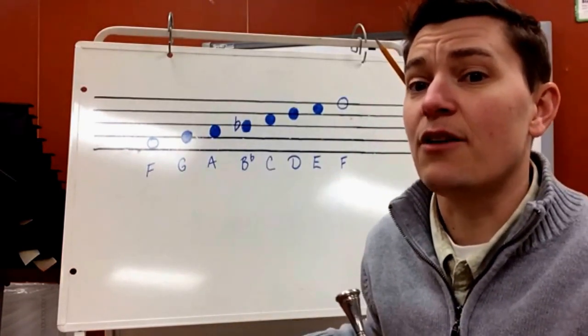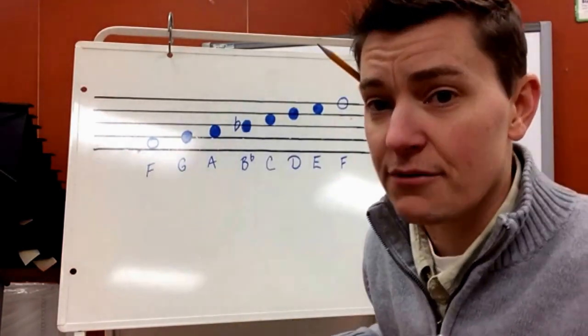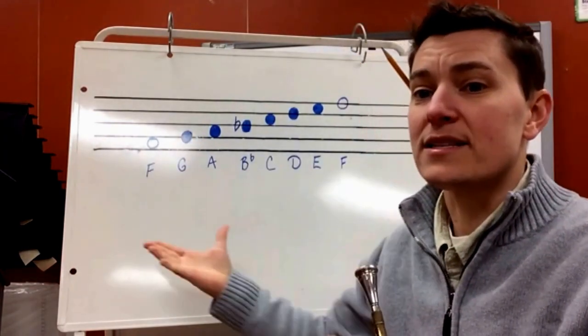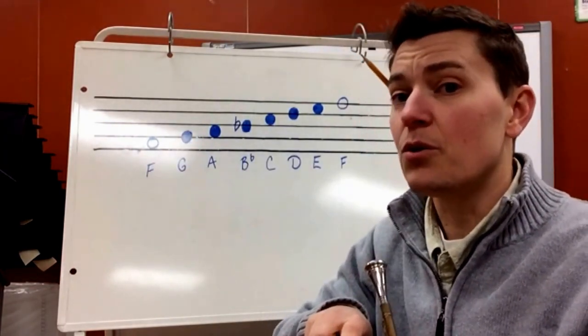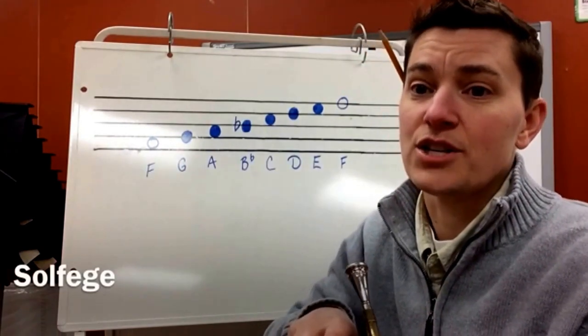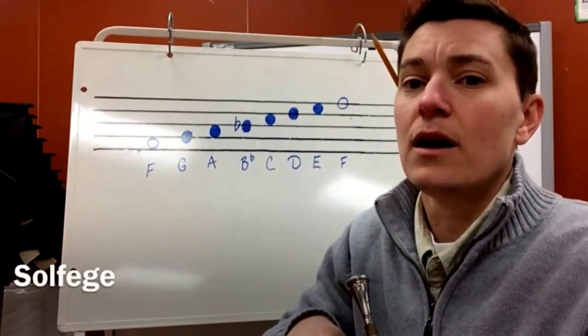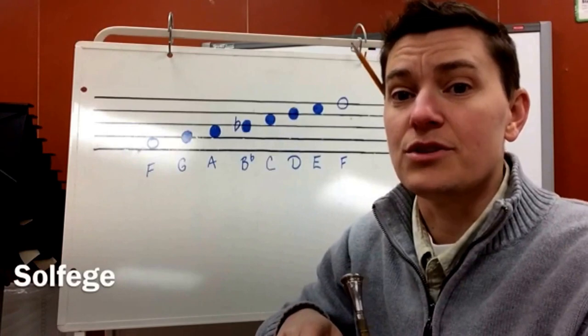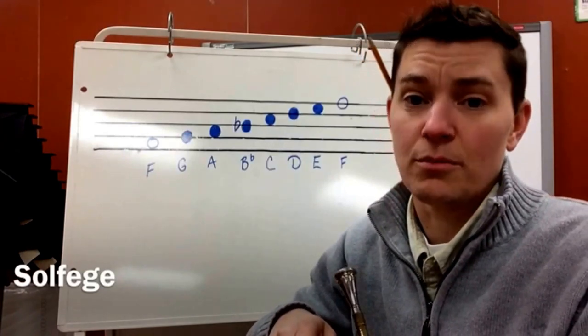So there's our F. We can sing the scale a couple of different ways. One, we can sing it with our letter names. Two, we can sing it with what we call solfege, which is different words that we use. You may have used this in your music class.